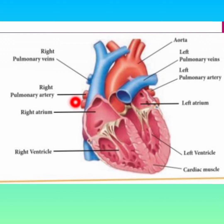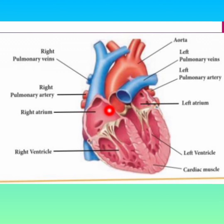The right side of the heart receives deoxygenated blood (shown in red) and pumps it to the lungs. The oxygenated blood then goes to the left side of the heart, which pumps it to the body.